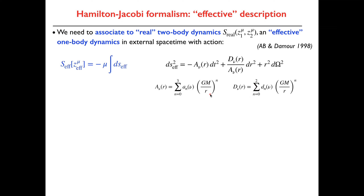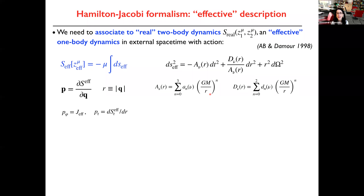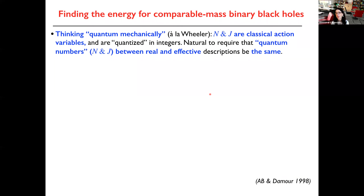Zakaria asks: you consider this mapping by supposing the energy is quantized — is there any problem when you go to the continuous case? We are not doing anything quantum; it's just getting an idea. We are not doing anything quantum. It's just that sometimes, as Wheeler used to say, you can be inspired to think of the problem in the context of quantum mechanics to guide your understanding even in the classical problem. My energy here is going to be completely continuous, but you can think of it as labeled by N and J.